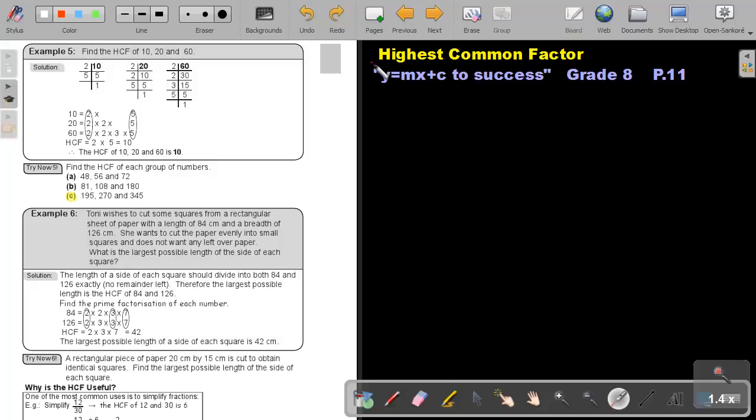In part 7, we're going to continue with the highest common factor, and we are going to find the highest common factor of 3 numbers. You will find this on page 11 in the Namibian Mathematics Grade 8 textbook, y equals mx plus c to success.